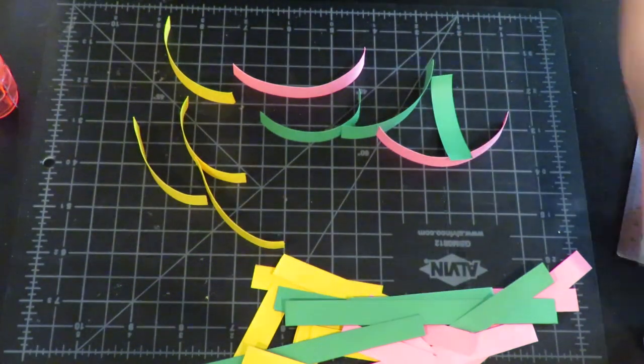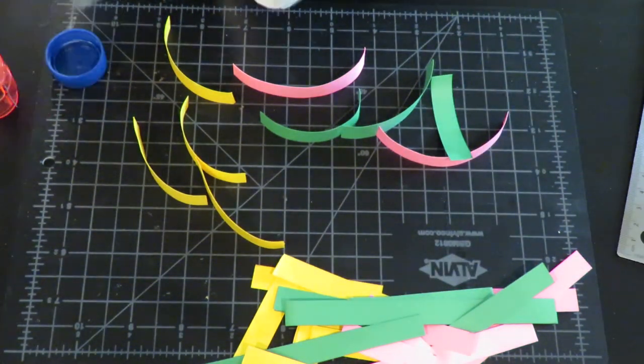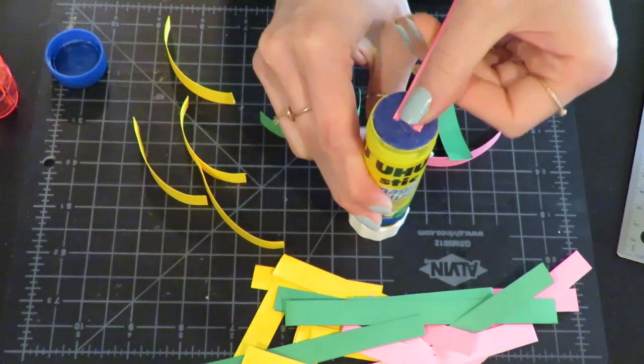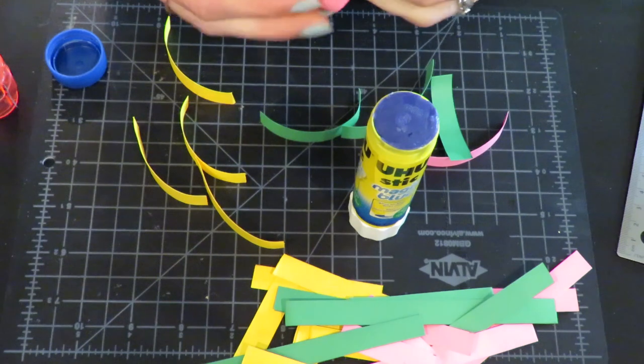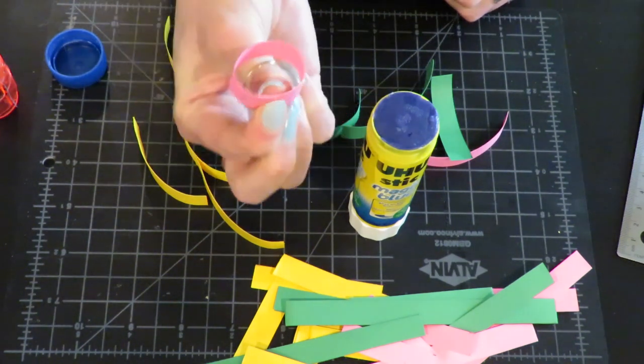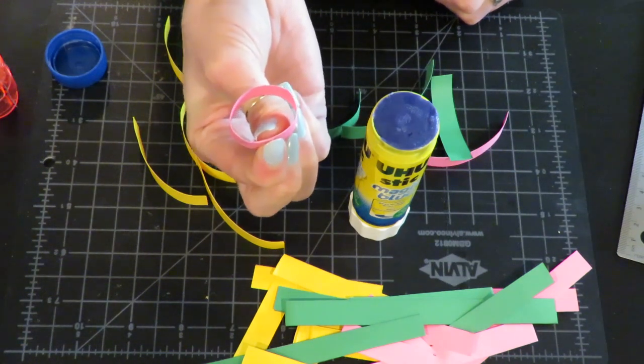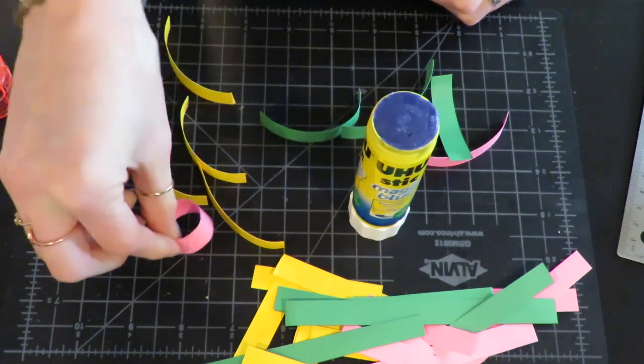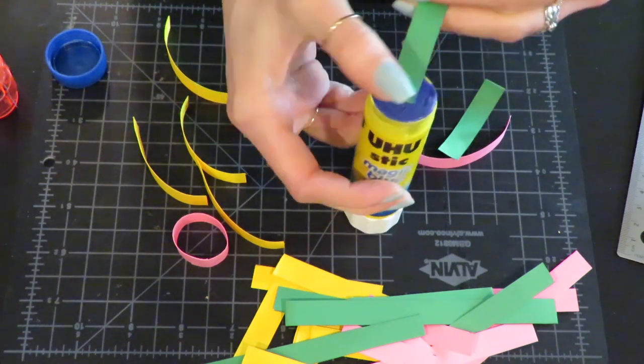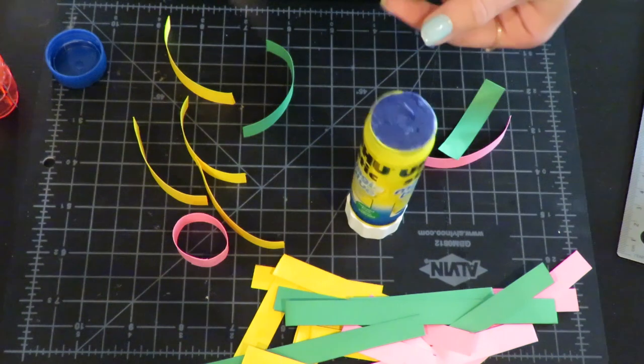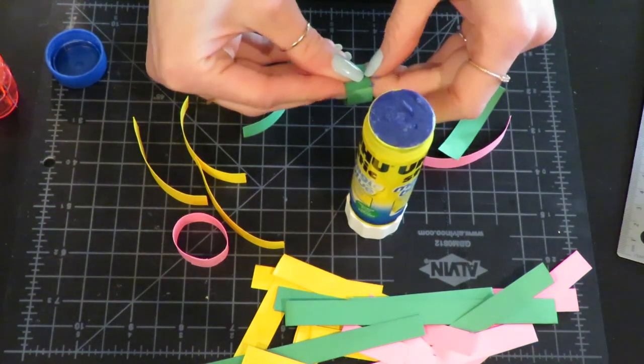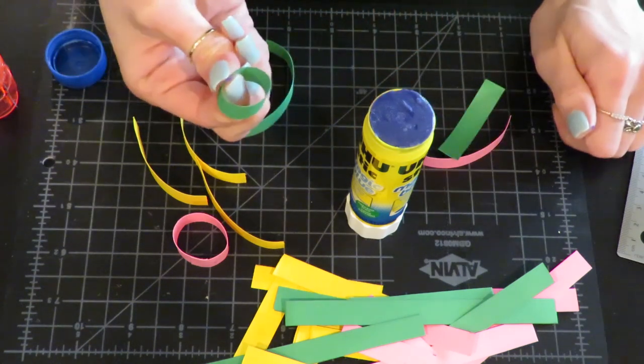And then once I have a good number of strips curled, I'm going to go ahead and secure them with either tape or glue. If I'm going to glue them, I'm just going to run the glue on the edge, bring my little piece around and hold that piece together for a few seconds. Again, I'm going to rub the edge on my glue stick, wrap the piece around, hold it for a few seconds.